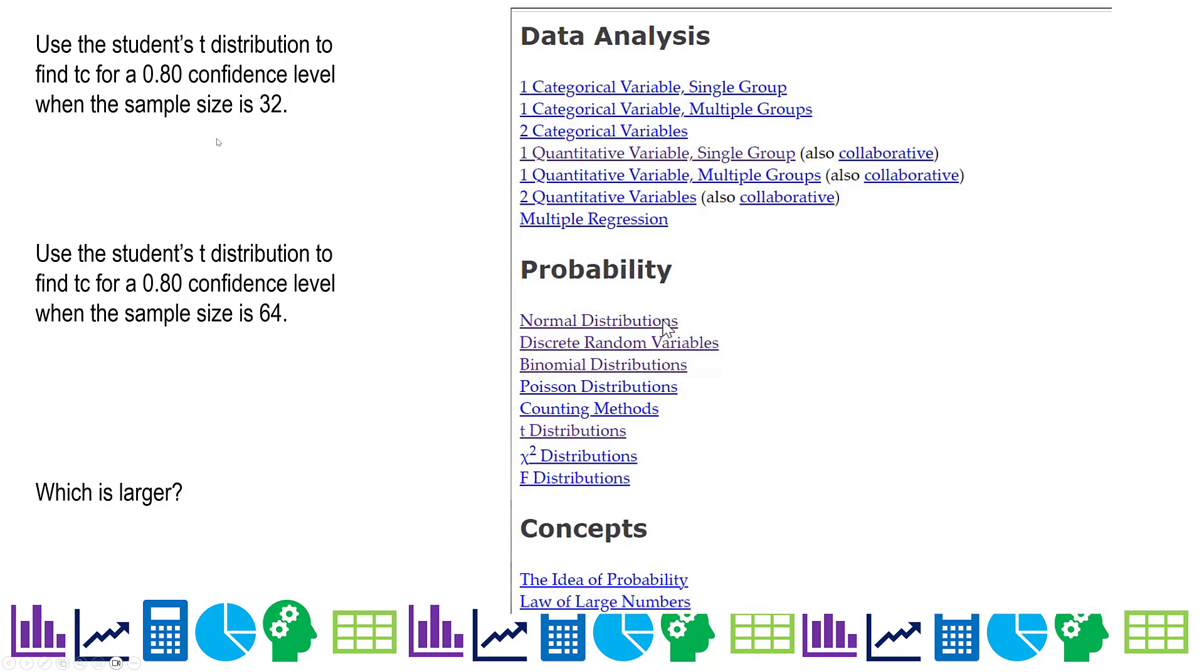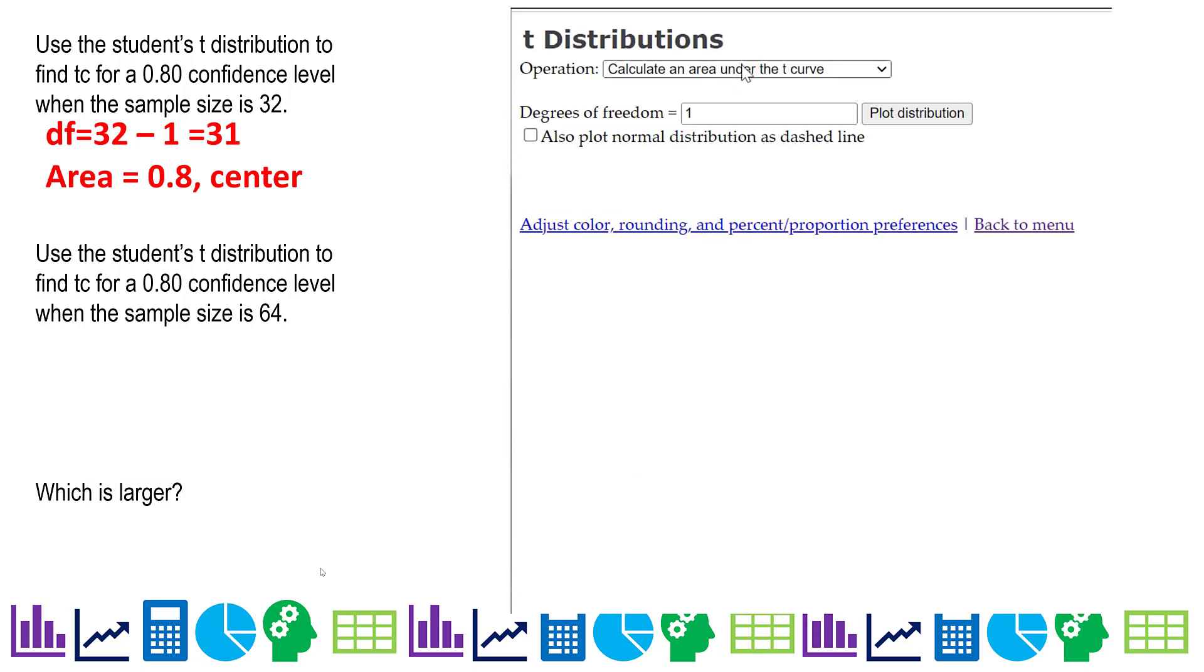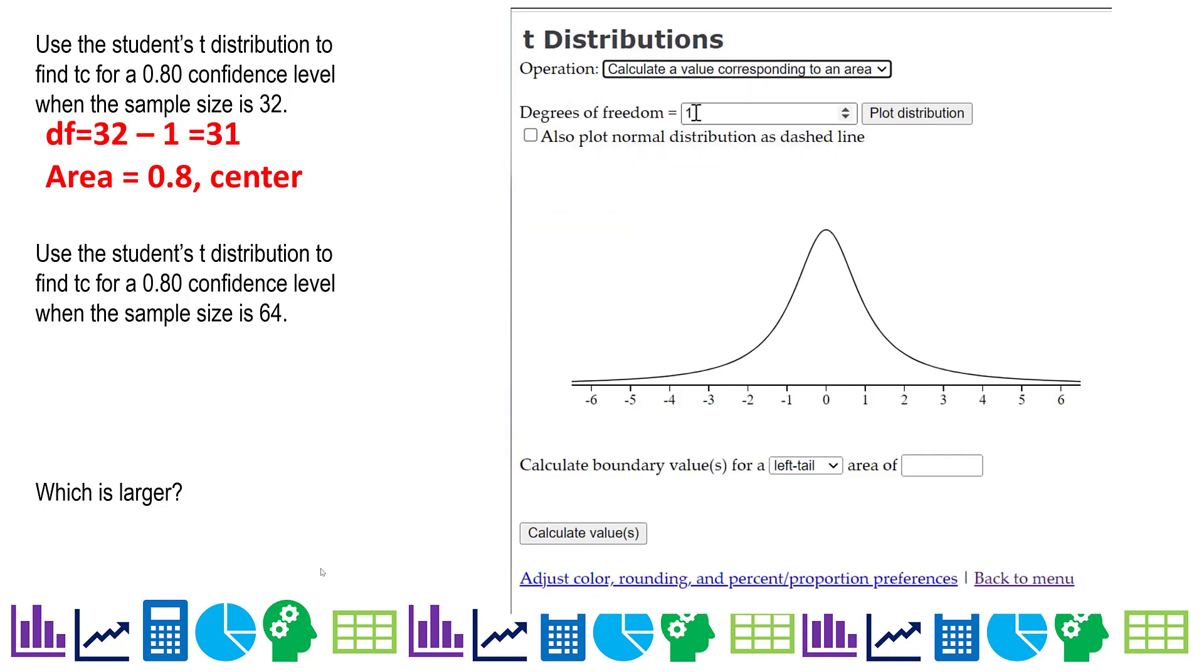So use this student's t-distribution to find tc for 0.8 confidence level when the sample size is 32. So what we first need to do is we need to know our degrees of freedom and our area. So our area is the center. Degrees of freedom is 32 minus one, so it's 31. And let's go ahead and pull up the Staplet.